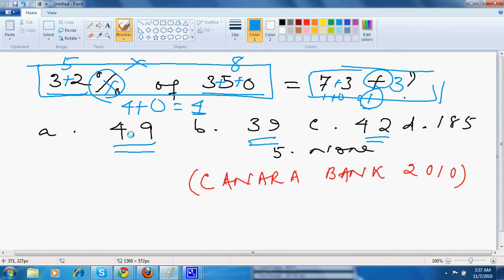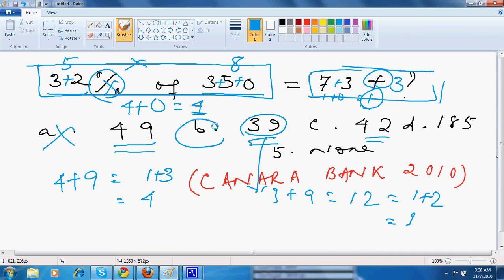So, option a, 49. Digital root of 49, it's just you add these two, this becomes 13. It can never be a double digit number, it's 1 plus 3 is 4. So I can easily say that this is not the answer. Now, 39, 3 plus 9 is 12, 12 means 1 plus 2 is 3. So here is my answer. But I can't say that it's the only answer, but I can say that it's one of my answers.